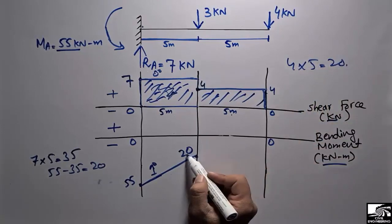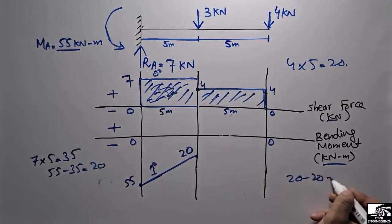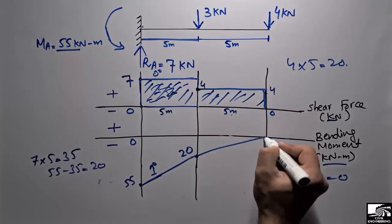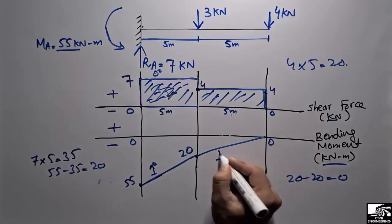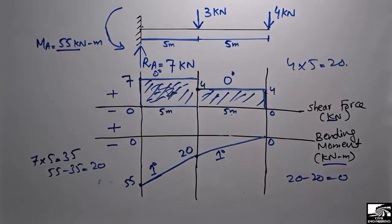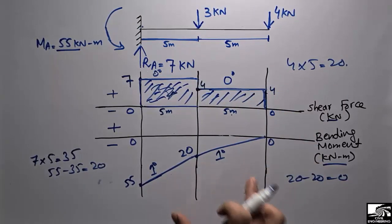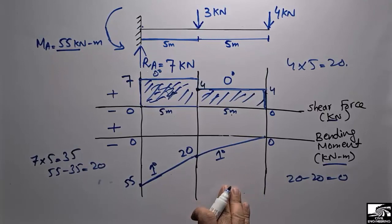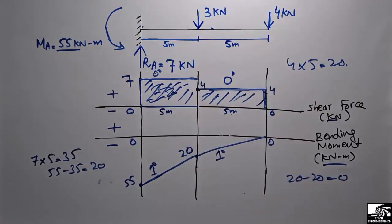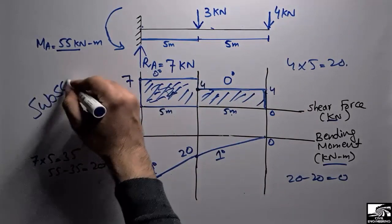For the second shear box, the height is 4 kilonewtons and the width is 5 meters, so 4 × 5 = 20 kilonewton·meters. Subtracting 20 from 20 gives zero, so there is no bending moment at the free end — which is correct. This is again a first-degree line. This completes the shear force and bending moment diagram for the cantilever beam with two point loads of 3 kilonewtons and 4 kilonewtons. For daily civil engineering videos, please subscribe to our channel. Thank you for watching.